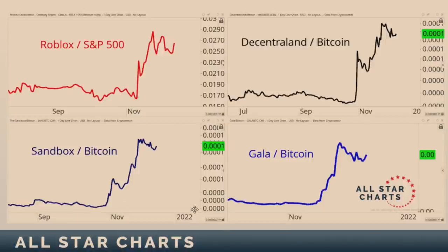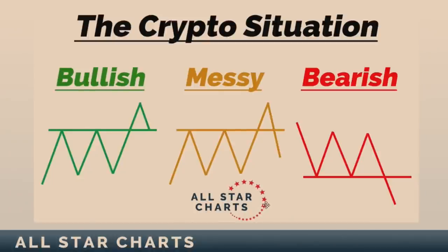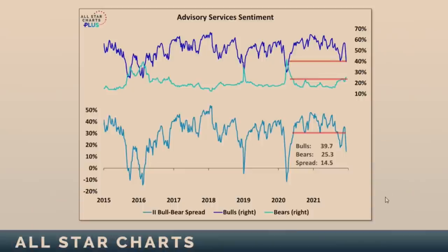I think these are interesting relative strength plays out of the video game space. Roblox (RBLX) — ask your kids about it — on a relative basis is just going from the lower left to the upper right. And in the crypto space, Decentraland, Sandbox, Gala — all going from the lower left to the upper right, really showing relative strength in the crypto space in general. A lot of the cryptocurrencies look like either ones that fail to break out or ones making lower lows and lower highs — we don't want to be buying those. We want the ones successfully retesting former highs, making higher highs and higher lows, showing relative strength.